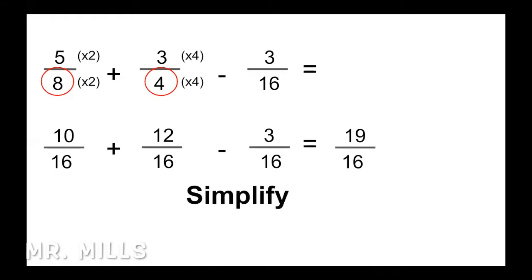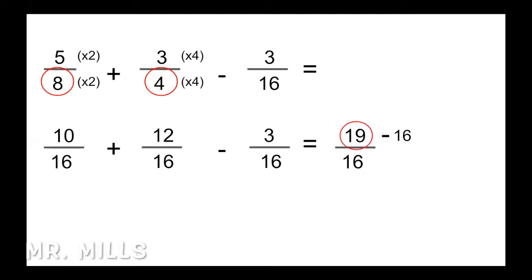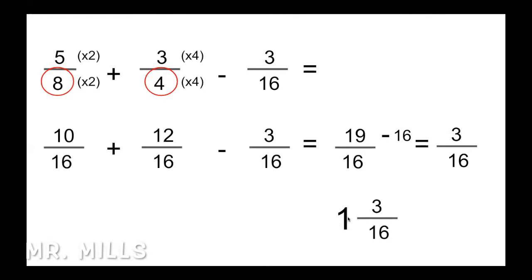We're not done — we need to simplify. We subtract 16 from 19, which leaves 3. So we have 3 sixteenths left over. Because we subtracted 16 one time, we write a whole number of 1. So 1 and 3 sixteenths is our answer — we get that whole number because we subtracted the denominator (16) from the numerator (19) once, with 3 left over.